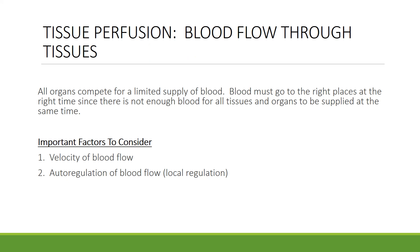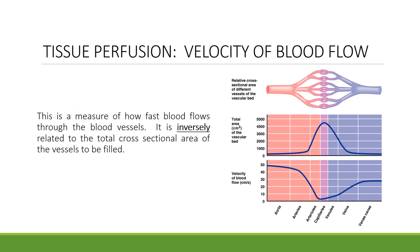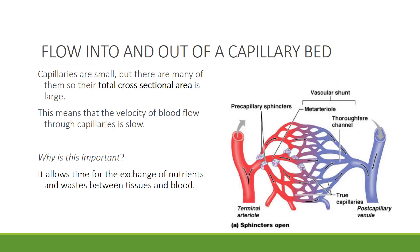Blood flow through the tissues is known as tissue perfusion. Because there's a limited blood supply, we want to ensure blood gets to the places it's needed at the time it's needed. The velocity of blood flow is inversely related to the total cross-sectional area of the vessels to be filled. Capillaries are very small but numerous, so their total cross-sectional area is very large — meaning velocity through capillaries is slow, allowing time for the exchange of nutrients and wastes between blood and tissues.